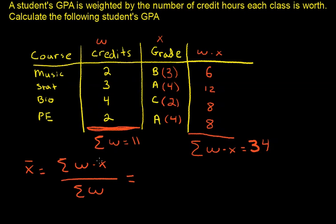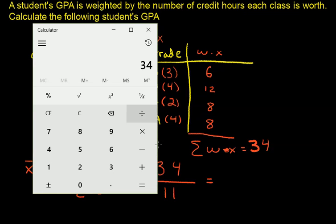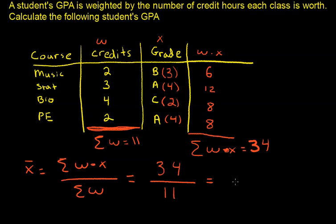This sum of W times X is 34, and then the sum of the weights is 11. When you take that into a calculator, 34 divided by 11, we'll go ahead and round to two decimal places, so that'll be 3.09. And that is the student's GPA for the semester. And that is how to calculate a weighted mean.